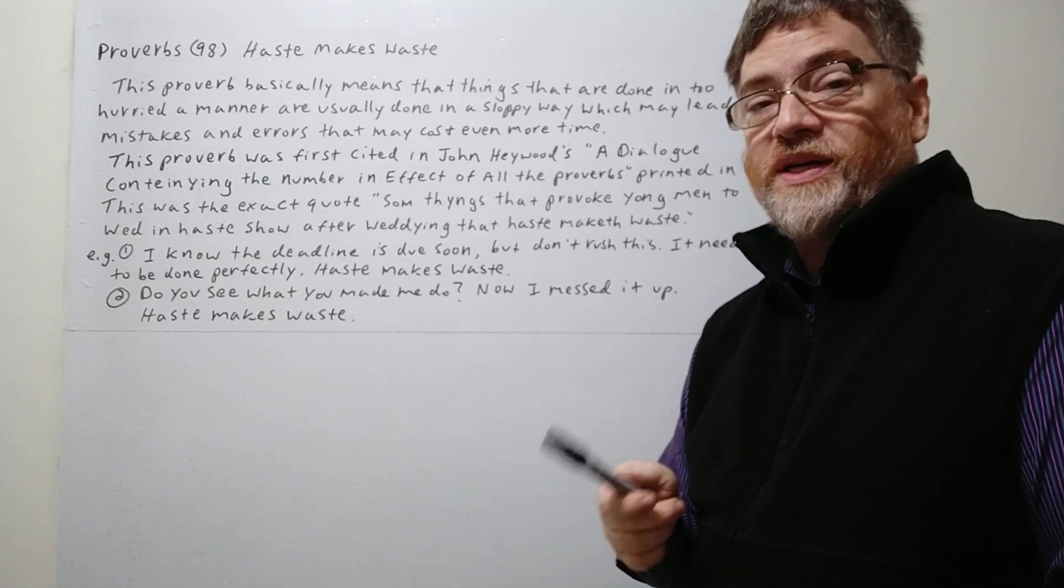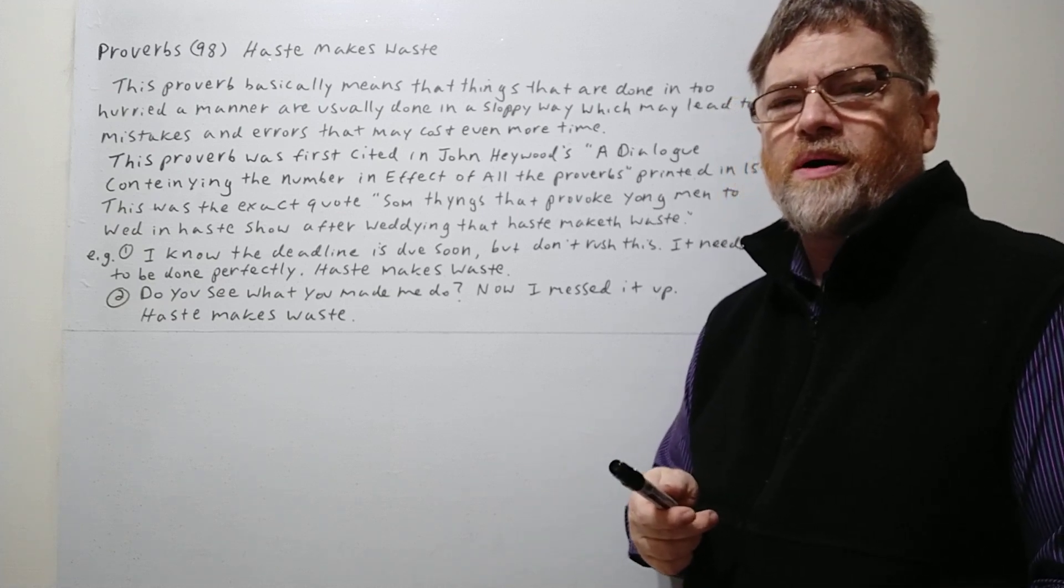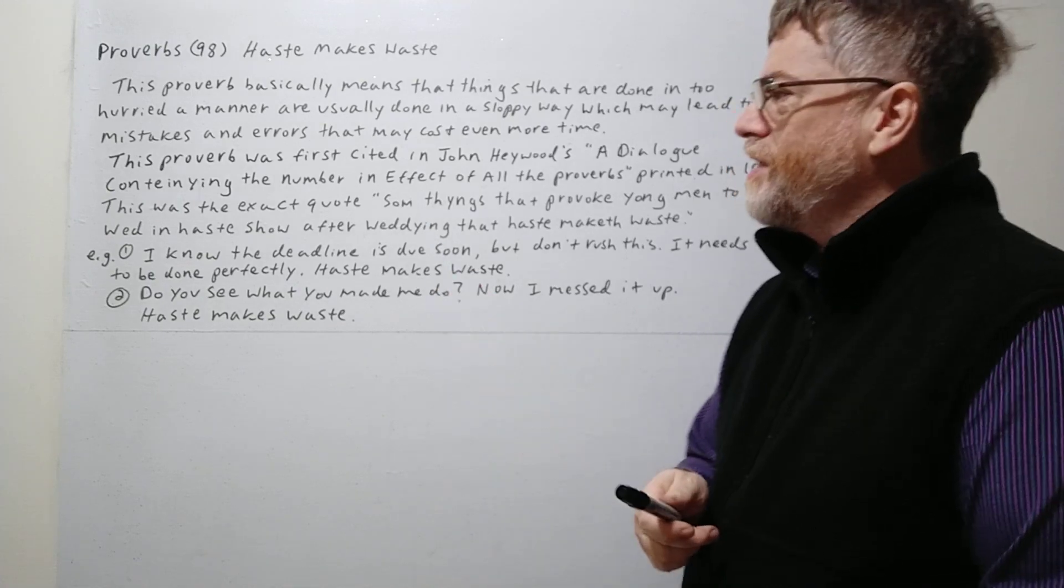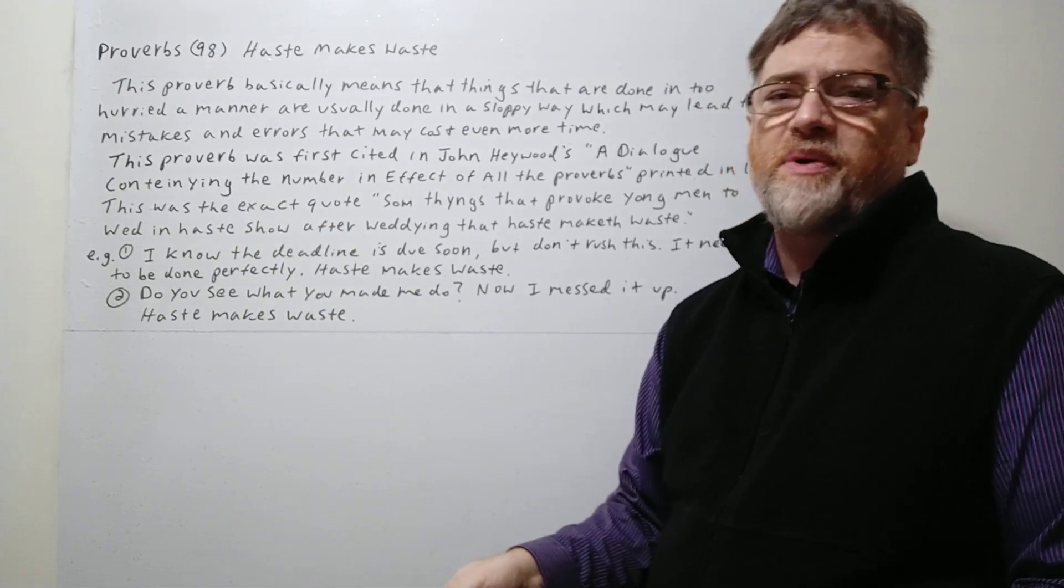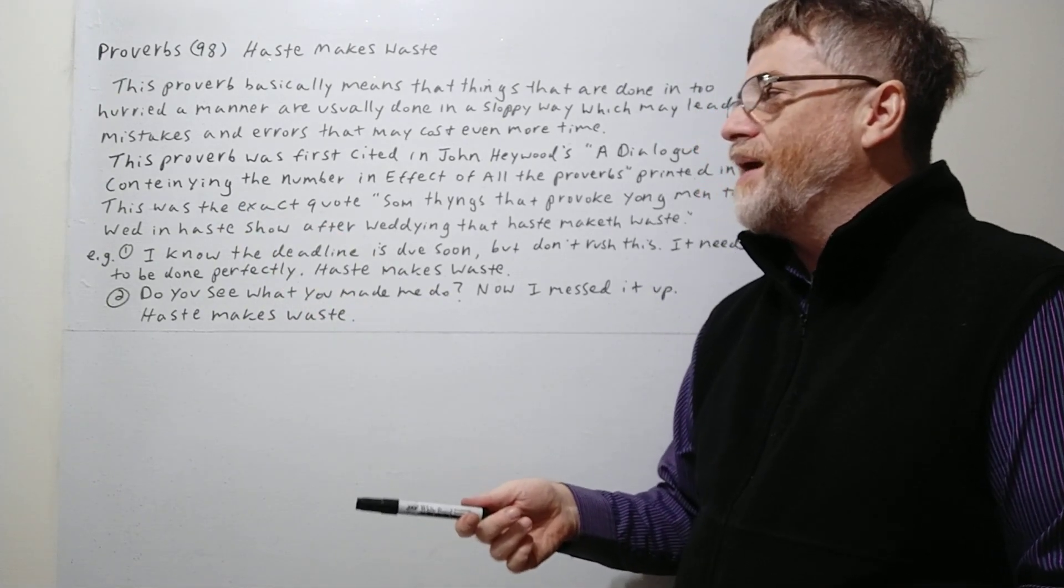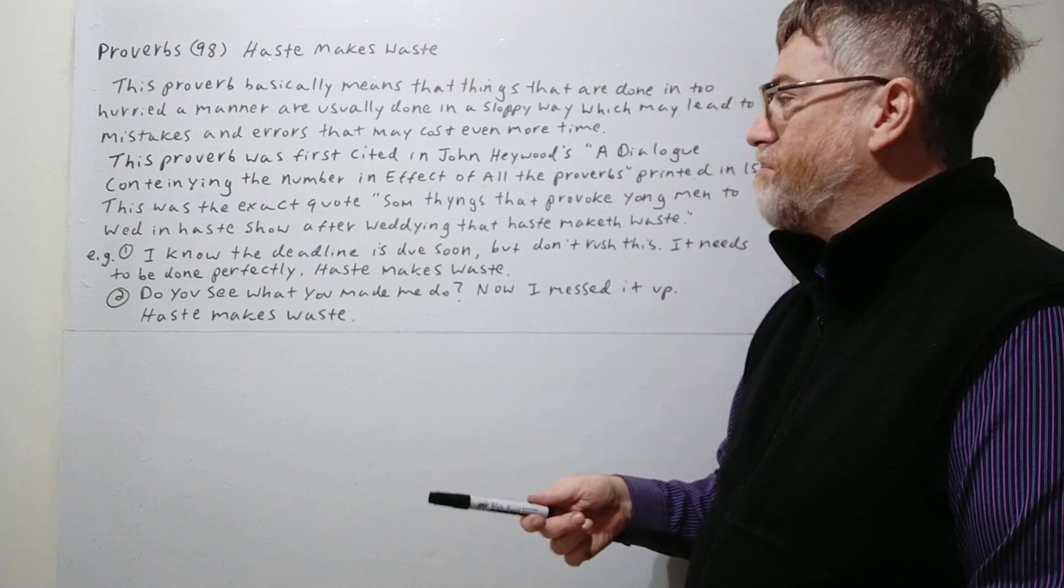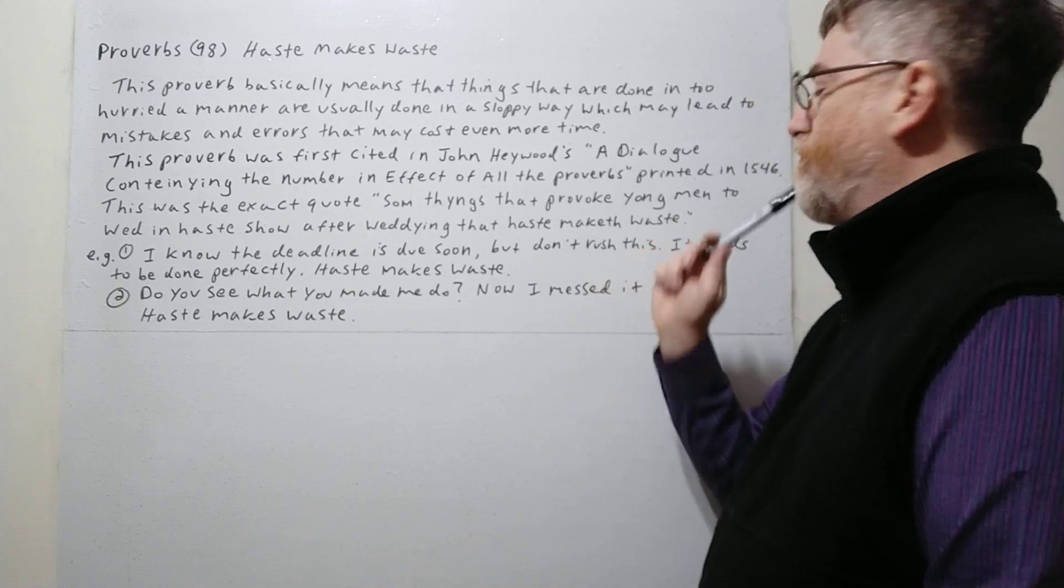Since it's 1546, we've got some Old English here, or you might say Middle English, where the spelling is very different. If you see some words like 'containing' for example, that's not how we spell it today. We spell it with T-A-I, not T-E-I. The number and effect of all the proverbs printed in 1546.